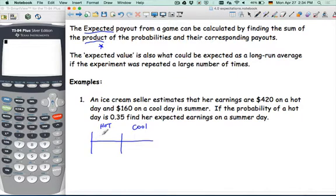A hot day and a cool day. On a hot day, I'm going to make $420. On a cool day, I'm going to make $160. And the probability of having a hot day is 0.35. Now, how would I find the probability of a cool day? We're going to define a day as either hot or cool. So these are complementary events. So probability of a cool day would be 1 minus a hot day, probability of a hot day. So it'll be 0.65.